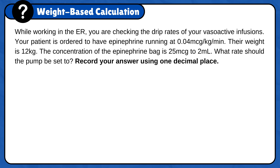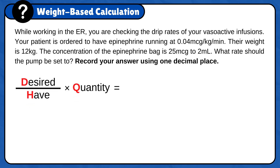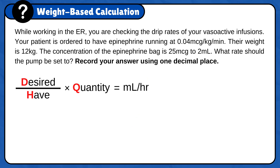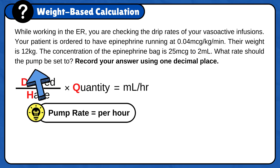While working in the ER, you are checking the drip rates of your vasoactive infusions. Your patient is ordered to have epinephrine running at 0.04 micrograms per kilogram per minute. Their weight is 12 kilograms. The concentration of the epinephrine bag is 25 micrograms to 2 milliliters. What rate should the pump be set to? Record your answer using one decimal place. First, set up the formula: desired over half times quantity — just imagine a duck on a horse quacking. Now add the unit answer, milliliters per hour. The volume we're working with is in milliliters and it is implied that the pump rate is per hour.